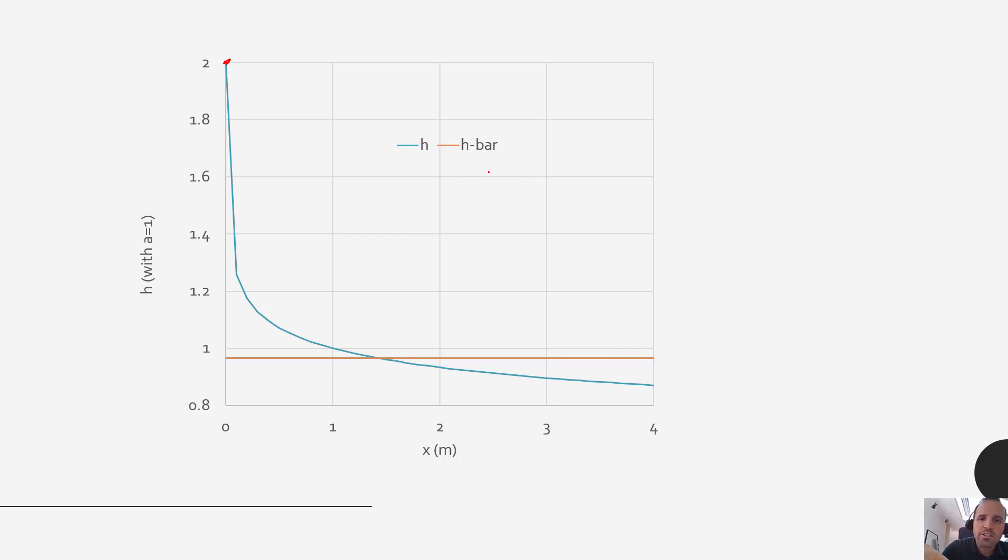So the real takeaway here is just to come away with this idea that although in past lectures and past homework assignments we've treated h as being constant over the entire surface, it may not necessarily be so. And that is because the flow characteristics can change as a function of where you are on the surface, as we demonstrated with the growing boundary layer when we have flow over a flat plate.